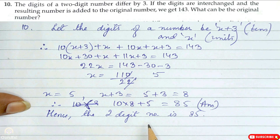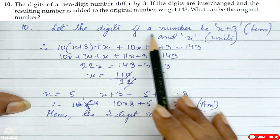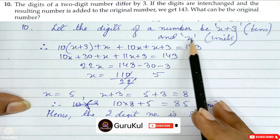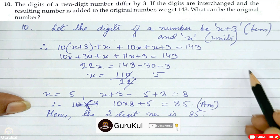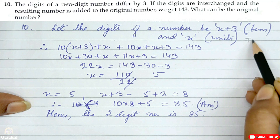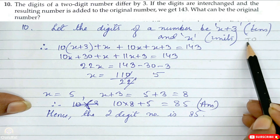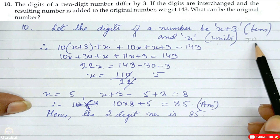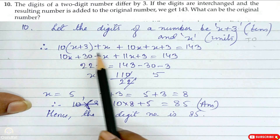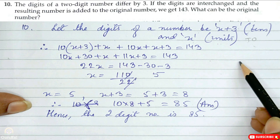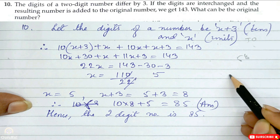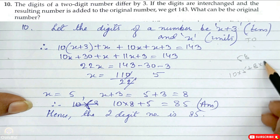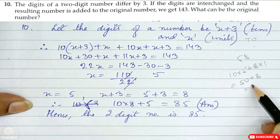Question number 10: The digits of a two-digit number differ by 3. If the digits are interchanged and the resulting number is added to the original, we get 143. What can be the original number? Let the digits of the number be (x plus 3) in the tens place and x in the units place. Recall the expanded form: for example, 58 = 10×5 + 8×1.